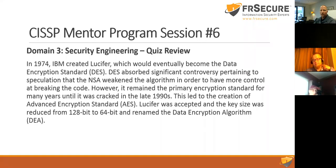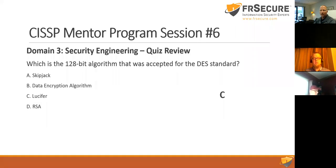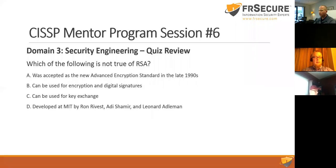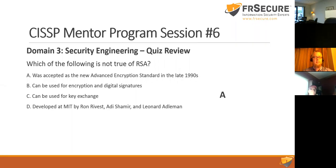Question eight: Which of the following is NOT true of RSA? Options: accepted as the new AES in the late 1990s, can be used for encryption and digital signatures, can be used for key exchange, developed at MIT by Ron Rivest, Adi Shamir, and Leonard Adleman. RSA was not accepted as AES — Rijndahl was — so A is correct.